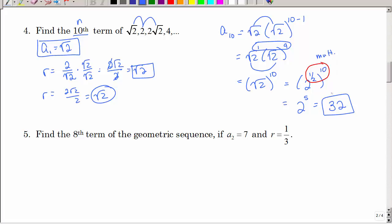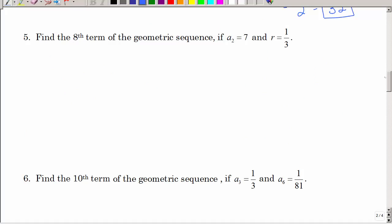And yes, I guess your calculator would have given you 32. But I wanted you to see and practice those rules of exponents to simplify those square roots. Alright, number 5. Find the 8th term. But they gave me the second term and they gave me r. Not quite the same. So, I want the 8th term.